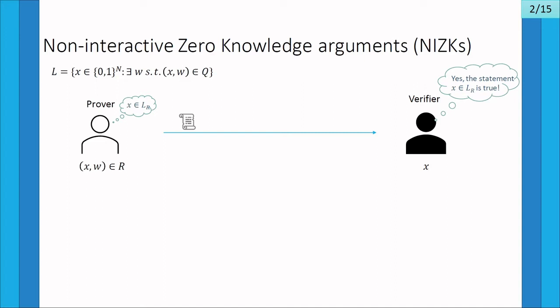Let's start by recalling what non-interactive zero-knowledge arguments are. Assume that we have a prover that wants to convince a verifier of the validity of some statement. We say that the statement x is true if it belongs to some language L, and the prover also knows a witness w that certifies the fact that the statement is true. For instance, you can think of the statement x as a mathematical theorem and the witness would be the actual proof of the theorem. The prover wants to convince the verifier that the statement is true without revealing anything about the witness w except that the statement is true.